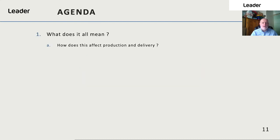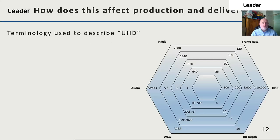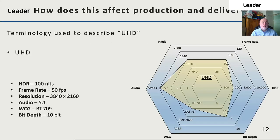So how does this affect production and delivery? It depends what your customer means by UHD. UHD in its basic format is just resolution — it's 100 nits, 50 frames per second, 3840 by 2160, audio 5.1, 709 colour space and 10 bits.